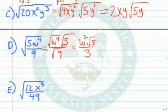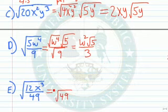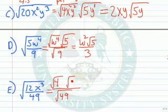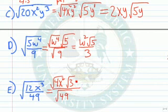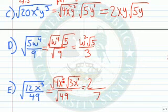Finally, how about the square root of 12x cubed over 49? The denominator we can write as the square root of 49. 12 we can write as the square root of two numbers — how about 4 times 3? 4 is a perfect square. x cubed — we take the highest even power below 3, which will be x squared. Now we're missing an x, so we need to put that over from this side. The square root of 49 is 7, the square root of 4 is 2, the square root of x squared — take half the exponent — is x to the first, times the square root of 3x.